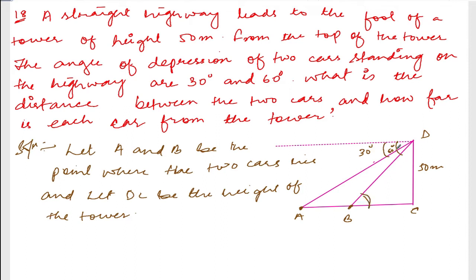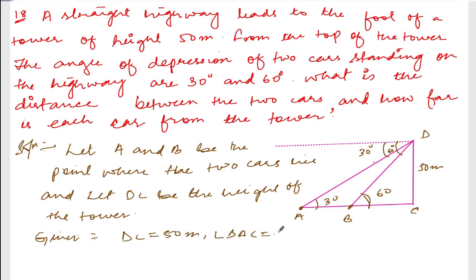Therefore, given: DC is equal to 50 meters, angle DAC is equal to 30 degrees, and angle DBC is equal to 60 degrees. We need to find AB — the distance between the two cars — and also BC and AC, the distances of each car from the tower.